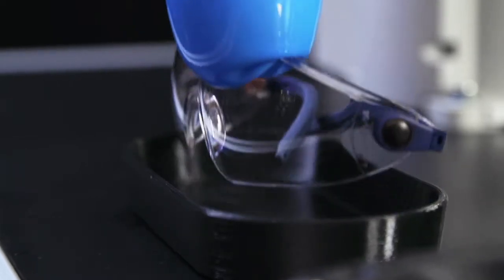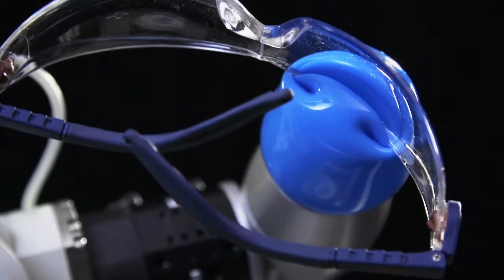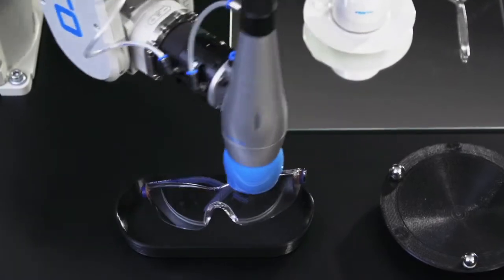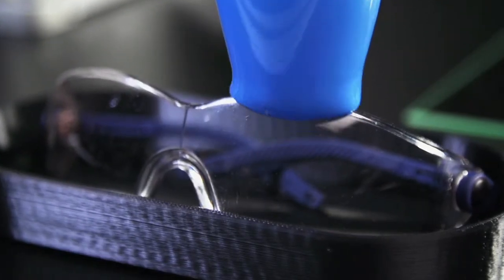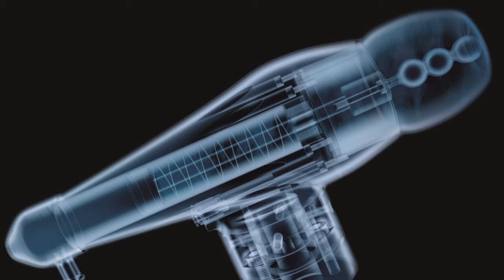Experts in bionics took a closer look at the chameleon's tongue and developed a gripper based on it. This gripper can flexibly adapt to all objects. Let's see how the gripper works.